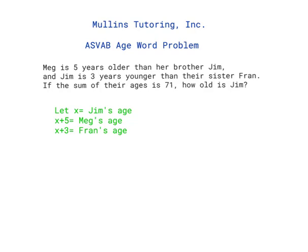Hi, my name is Jennifer Mullins. I'm the owner of Mullins Tutoring Incorporated, and today I'm going to be working on an ASVAB age word problem. We're going to try to find the age of the person the question is about. Meg is five years older than her brother Jim, and Jim is three years younger than their sister Fran. If the sum of their ages is 71, how old is Jim?